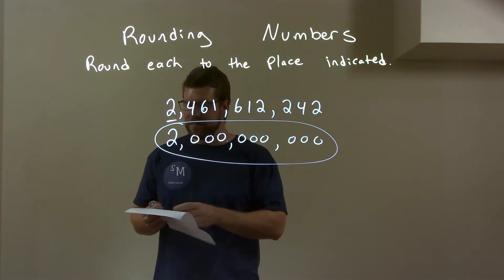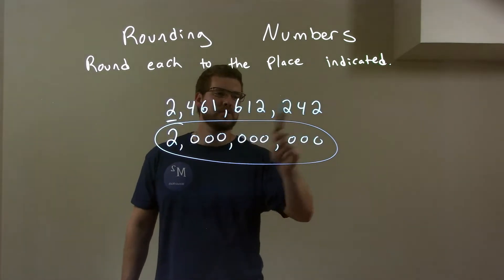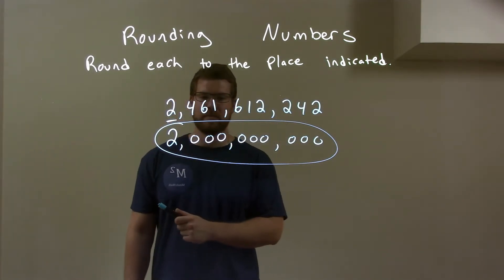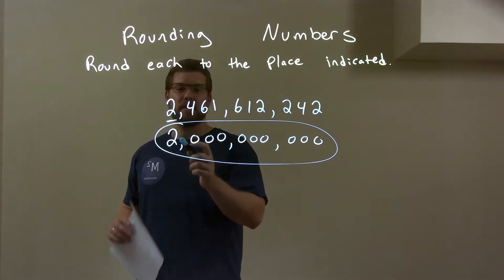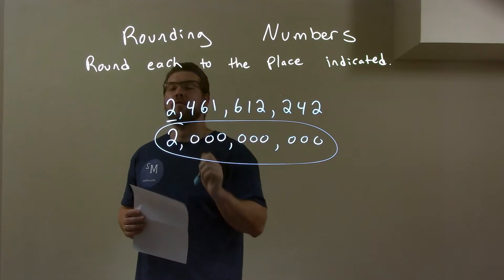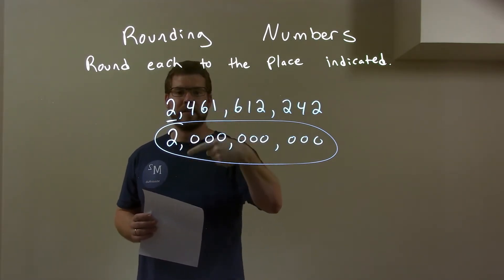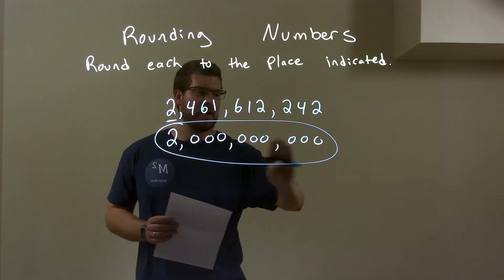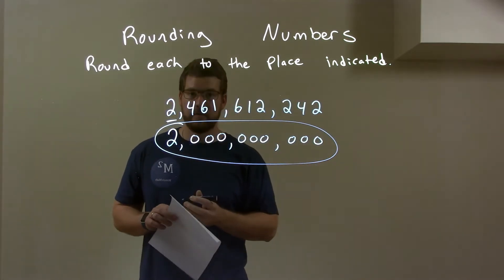So quick recap. We're given 2, 4, 6, 1, 6, 1, 2, 2, 4, 2, and we're rounding at this first 2. When I look here, the digit to the right is just a 4. That's in the category from 0 to 4, so we're rounding downwards, meaning this 2 stays the same. The rest are just zeros. And then we have our final answer.